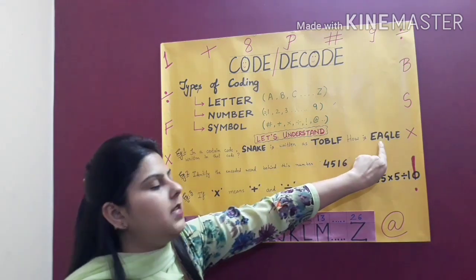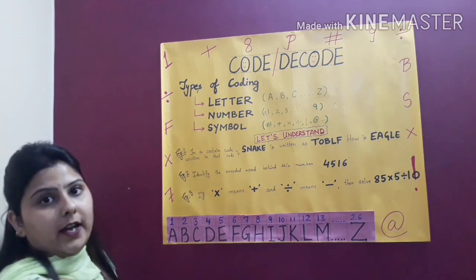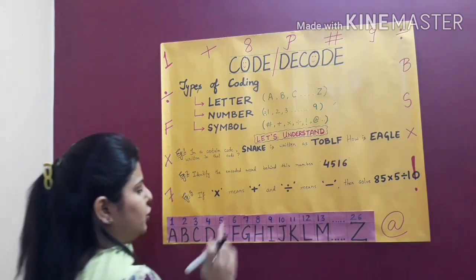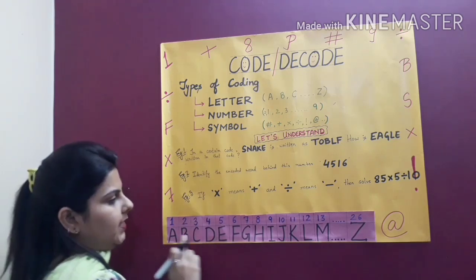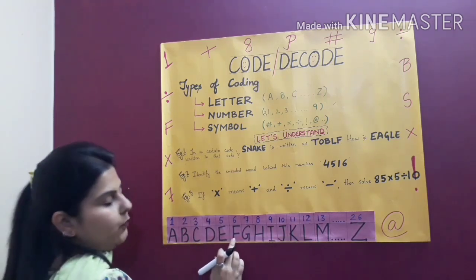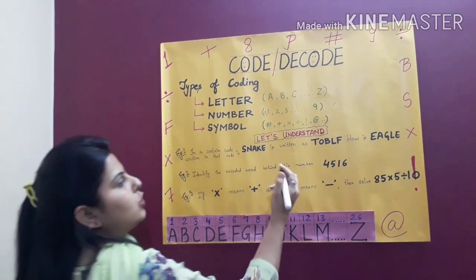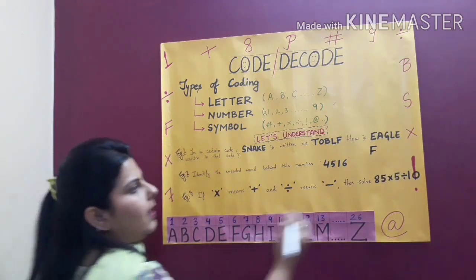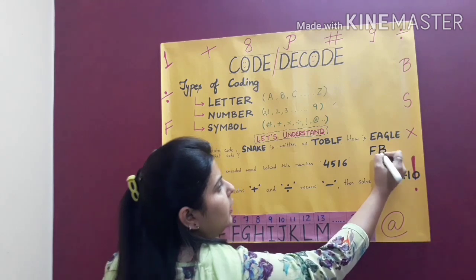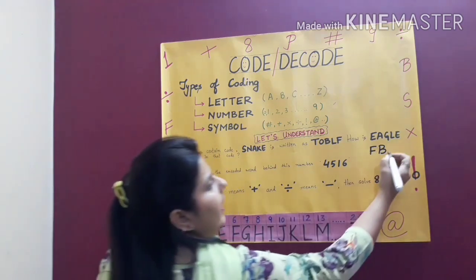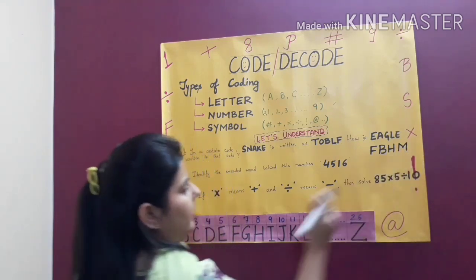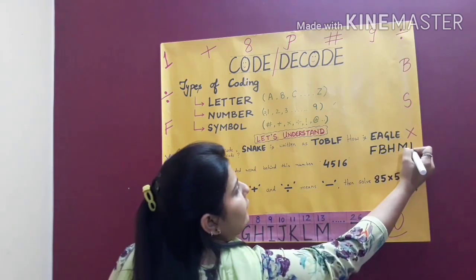Similarly, I can change this EAGLE. So if I change this EAGLE, it will become... Now E will change to F. You can see in this chart. After E what letter is there? F. So E becomes F. A becomes B. G becomes H. L becomes M. And E becomes F.